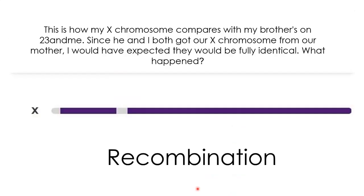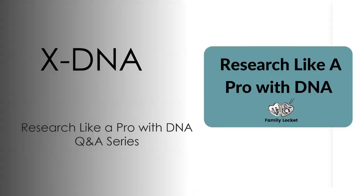So the answer is recombination. The two brothers don't share their full X chromosome because some recombination occurred. We hope you'll continue to follow the Research Like a Pro with DNA question and answer series. Best wishes with your DNA analysis and using it to find your ancestors.